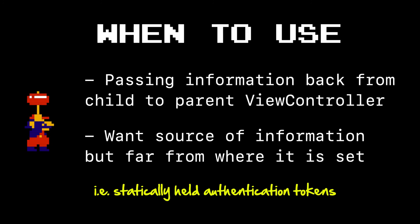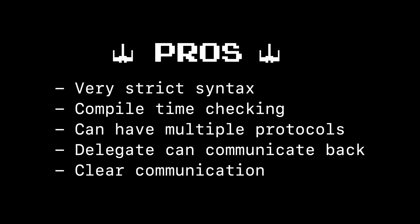A good time to use the protocol delegate pattern is whenever you're passing information back from a child to a parent view controller — a typical use case when you want to update the UI and some other object is doing that work for you. The data source pattern is really nice if you don't always have the information you need at the time of processing but it could be set up somewhere else. I've used this in applications where I need security tokens and I'm not sure exactly when they'll be set as part of the login process — having web services query data sources for authentication tokens keeps that information available throughout the application. The pros: this is strict syntax, you get all the compile-time checks, you can have multiple protocols used in various view controllers, and it's a really clear pattern.